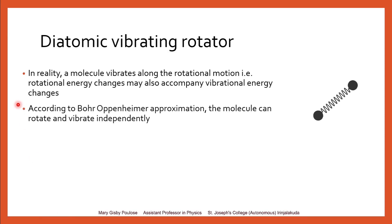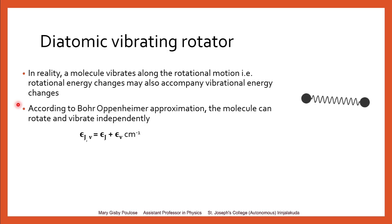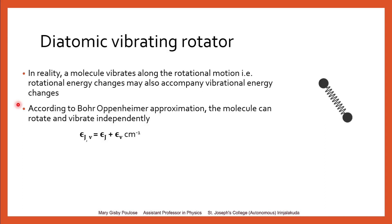According to the Born-Oppenheimer approximation, the molecule can rotate and vibrate independently. Its energies can be taken as the sum of vibrational energy and rotational energy, given as eta(j,v) = eta(j) + eta(v), with units of centimeter inverse (wave number). Since the molecule can rotate and vibrate independently, its energies can be just summed up, represented as eta of j comma v.